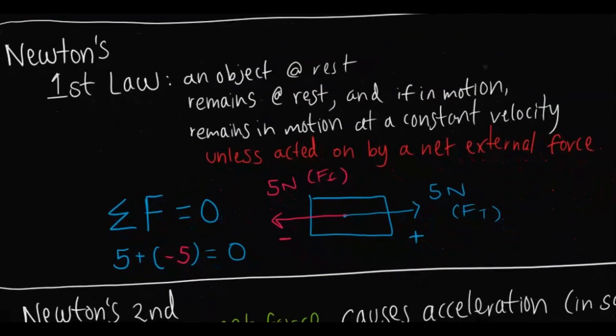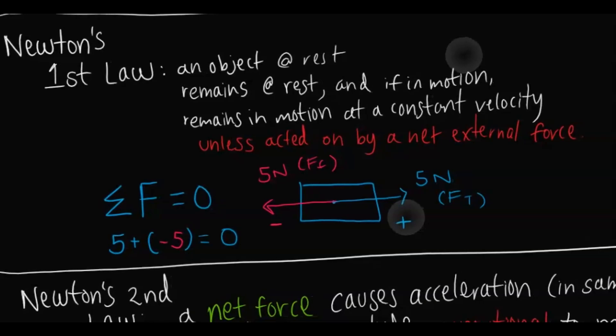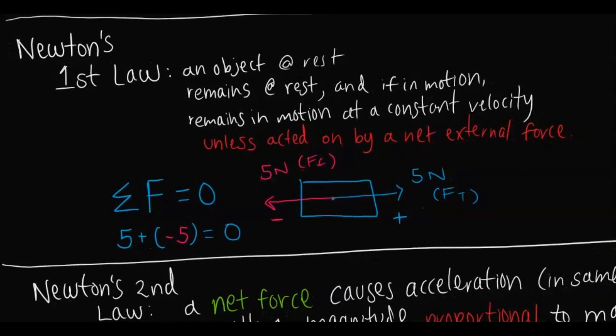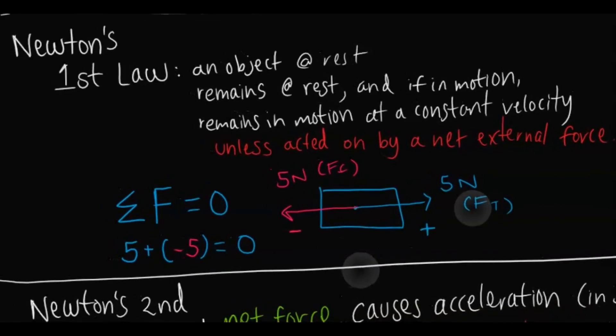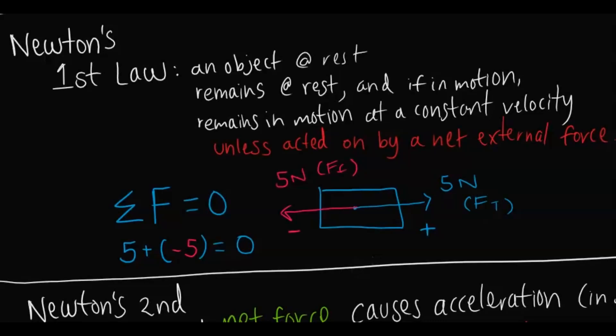Newton's first law states that an object at rest remains at rest, and if it's in motion it will remain in motion at a constant velocity, unless acted upon by a net external force. Revisiting that block — with 5 newtons of tension and 5 newtons of friction — the object is either at rest or moving at constant velocity because the net force is zero.